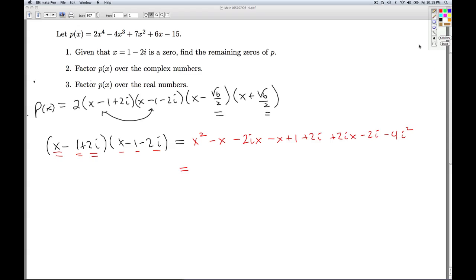Now remember, i² is -1. So what do I get? I've got x². I've got -x - 2ix - x + 2ix. So the 2ix's are gone, and I'm left with -2x. I've got 1 + 4, because this is -4 times -1. So that's going to give me 5. And the 2i's cancel out. So I get x² - 2x + 5.